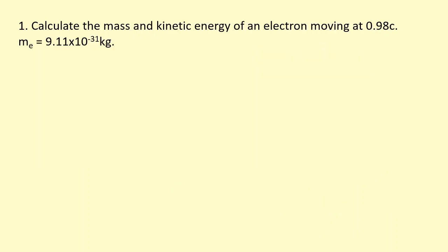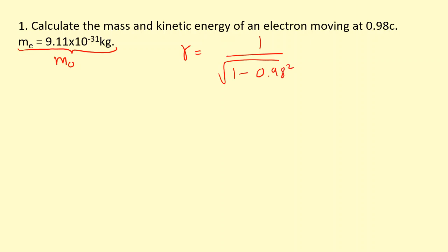Let's calculate the mass and kinetic energy of an electron moving at 0.98 times the speed of light. We've been given the rest mass of the electron. First, I'll work out gamma: gamma equals one over the square root of one minus 0.98 squared, which gives 5.025. To work out the relativistic mass, I take the rest mass and multiply it by gamma, giving 5.025 times the rest mass.